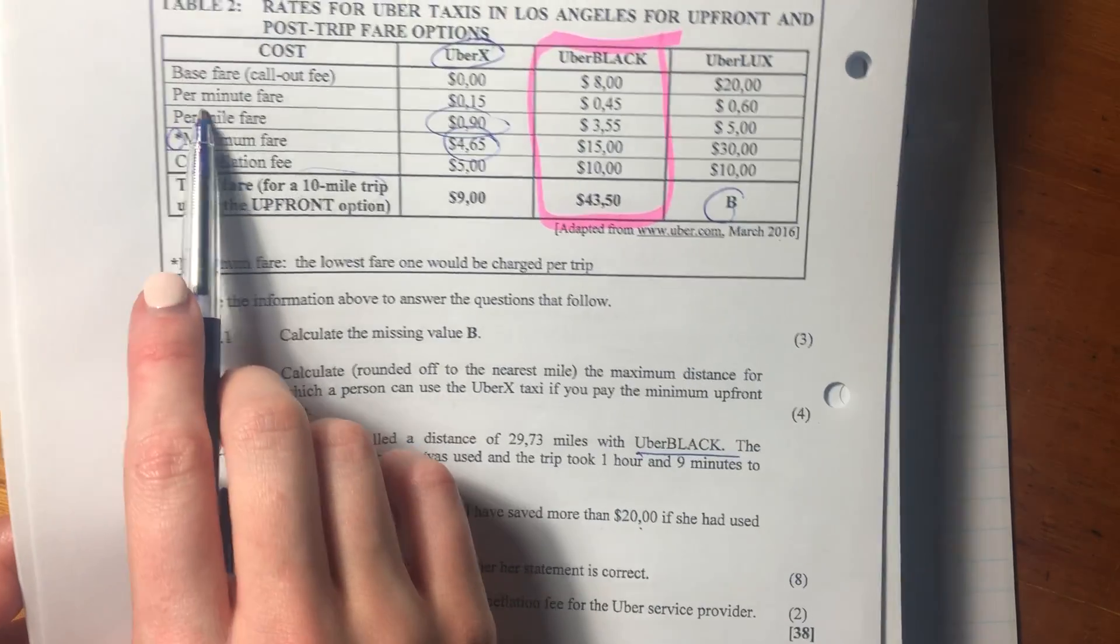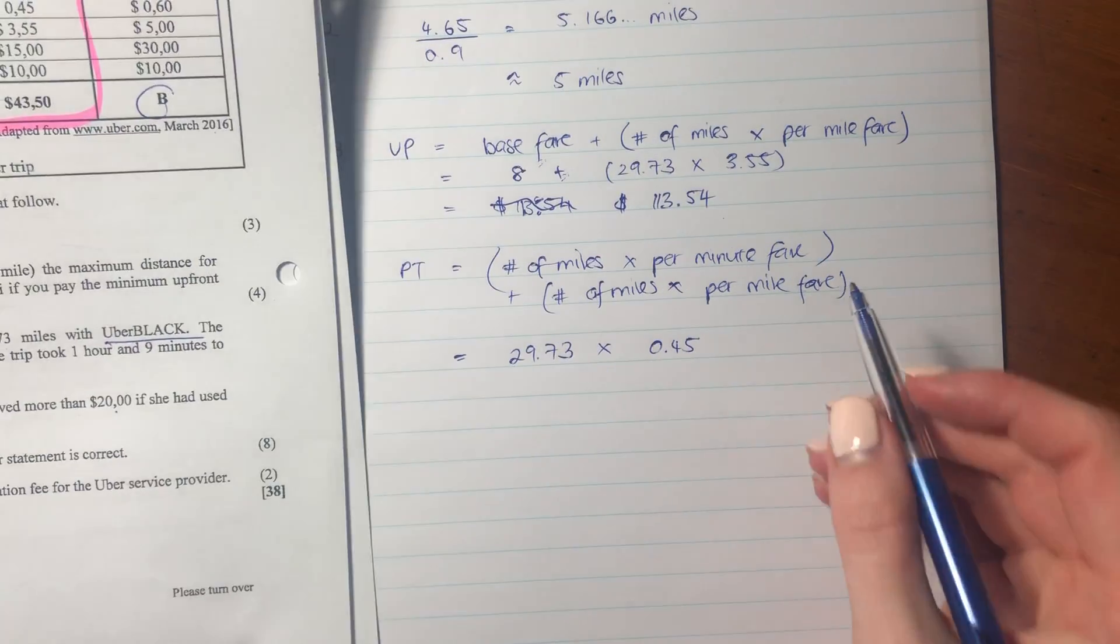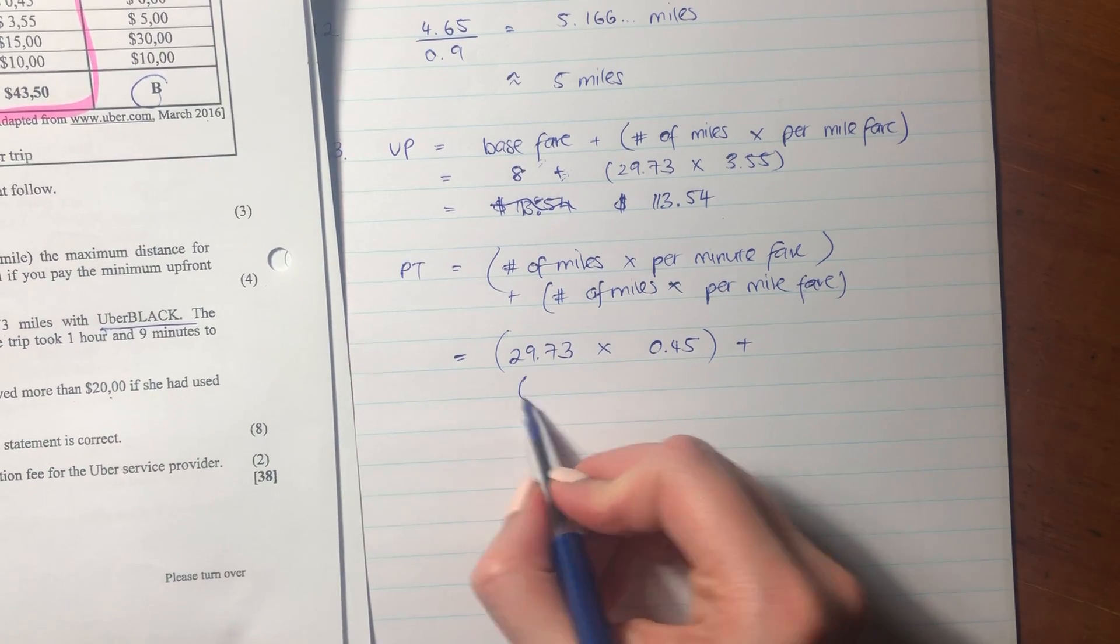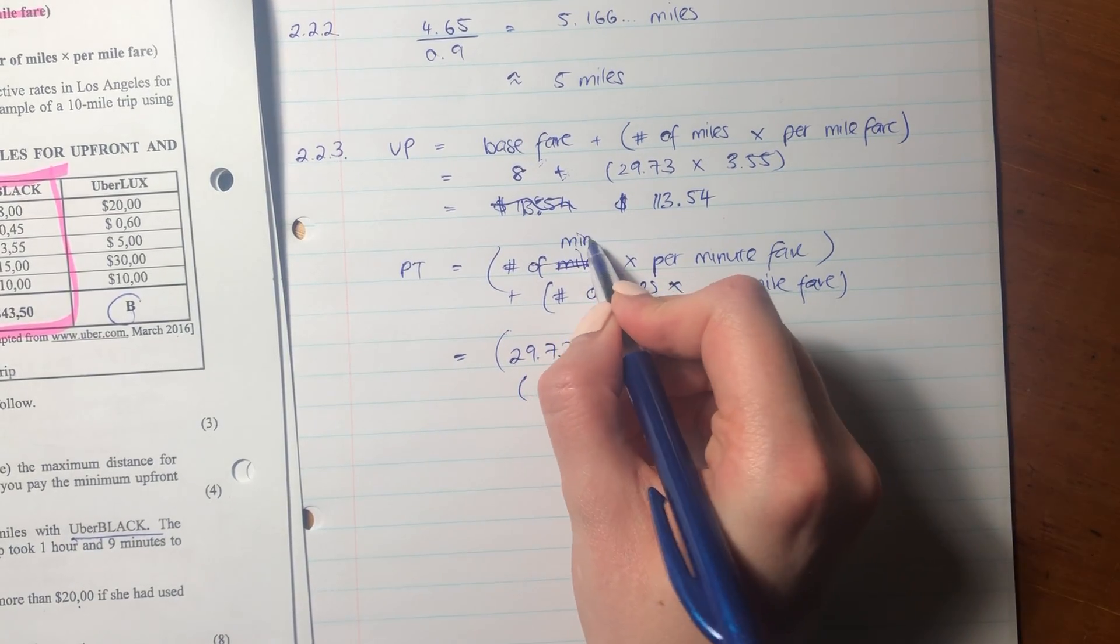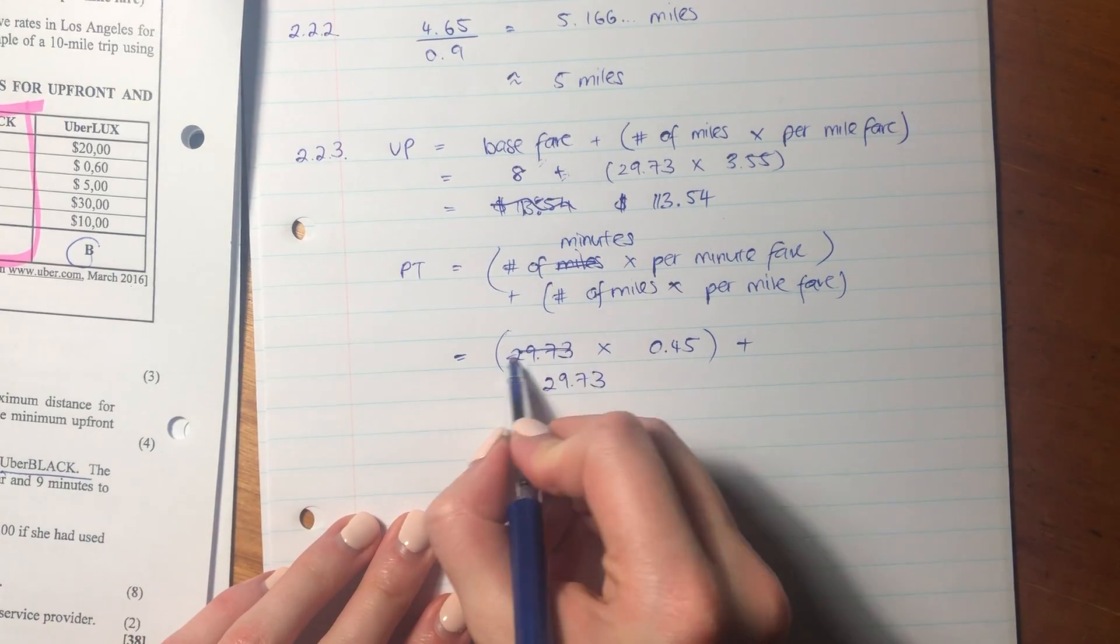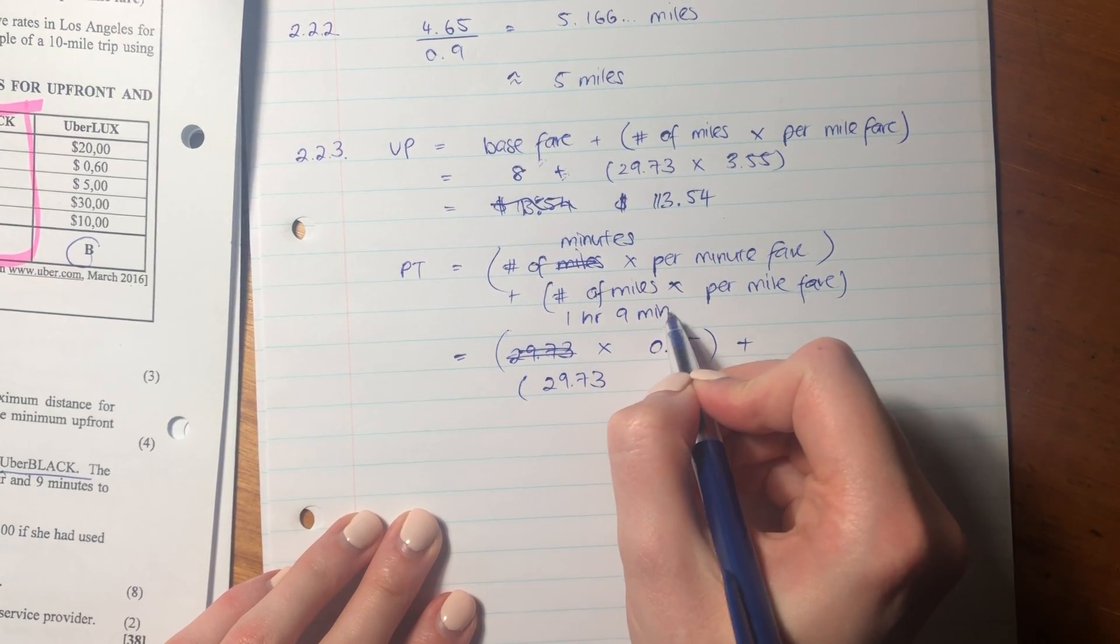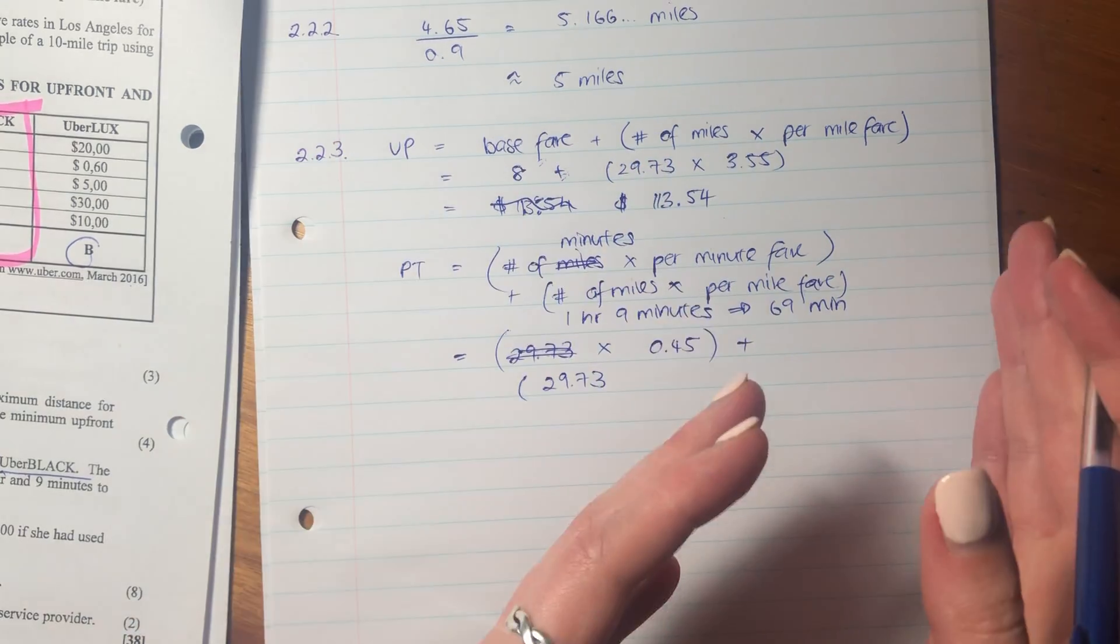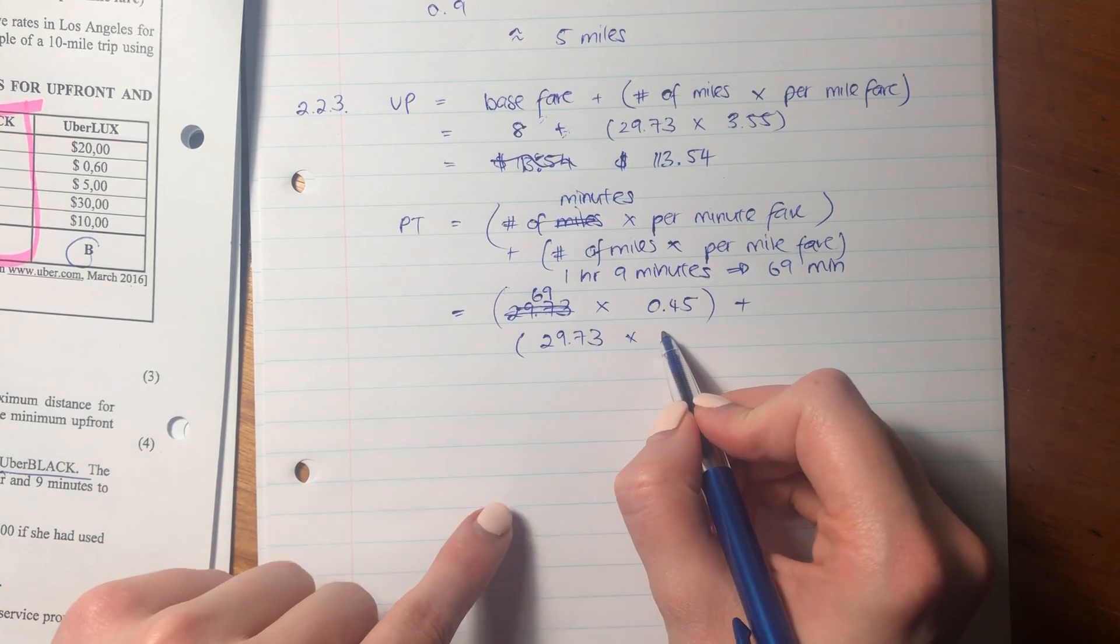So the number of miles is 29.73. We know that. The per minute fare is 0.45. You see, it's important to make sure that you read the question. So this actually isn't 29.73. It's actually number of minutes. It's one hour and nine minutes. Let's convert that into completely minutes. Be 69 minutes, because there's 60 minutes in an hour plus the nine, 69 minutes. So it's going to be 69. Important that you make sure that you actually are reading the question because you see I made a mistake there and you don't want to make a similar mistake. So we've said number of minutes times the per minute fare, number of miles times by the per mile fare.